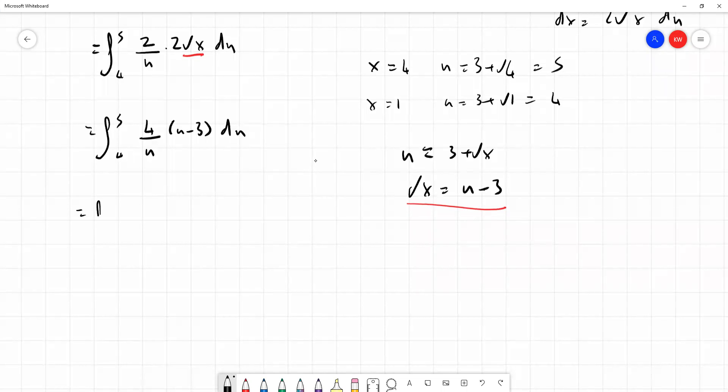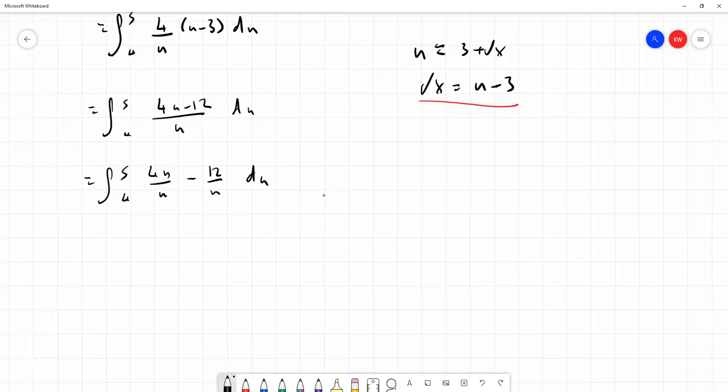Expanding out this bracket is going to give us 4u minus 12 over u du. This isn't something that we can integrate straight away, but this is equal to 4u over u minus 12 over u. We always do this with a fraction. If something is added or subtracted from the top, we can split it into two fractions with the same denominator. The fraction on the left hand side is just going to become 4. It's 4u over u is 4 minus 12 over u du. And we can integrate this.